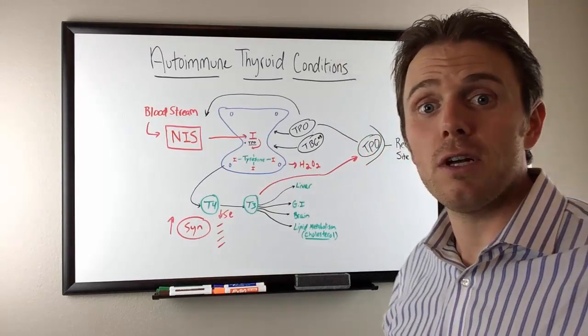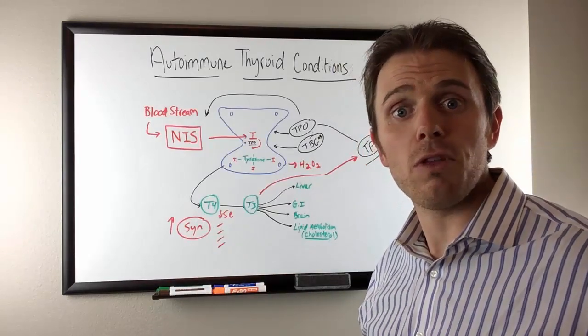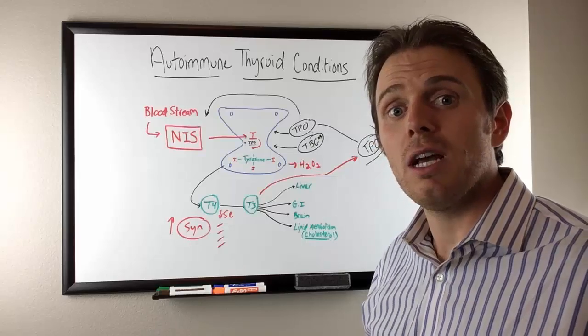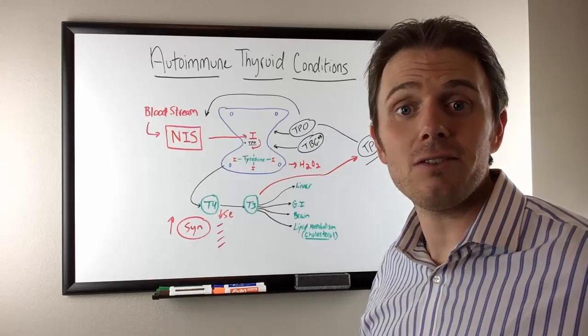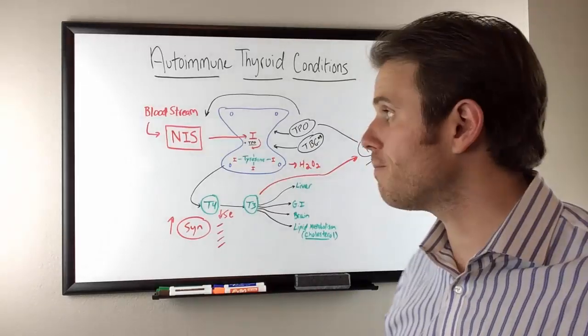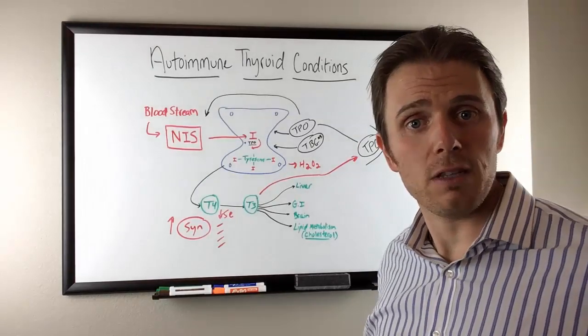About 40% of Hashimoto's or autoimmune thyroid conditions are false negatives. You get a negative on the test, but it may still be positive. So recapping everything here one more time.